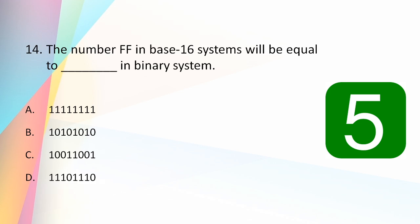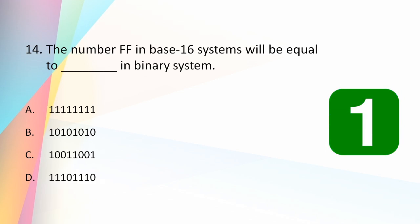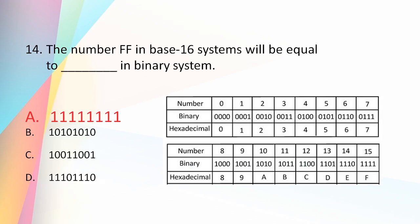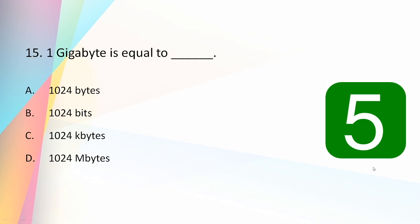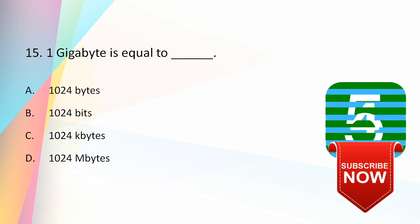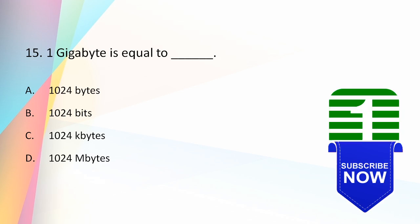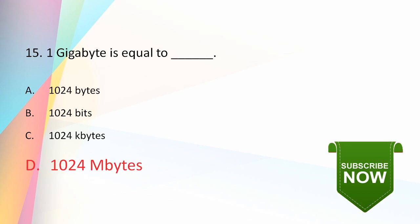The number FF in base-16 (hexadecimal) will be equal to what in binary? The answer is 11111111, because F means 15, represented by 1111 in binary, so FF becomes 11111111. Additionally, one gigabyte is equal to 1024 megabytes.